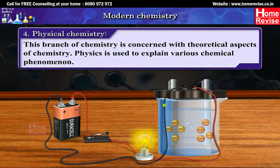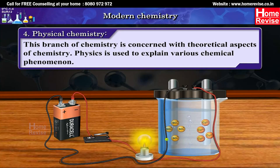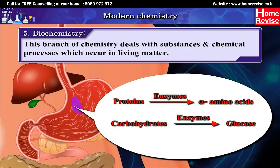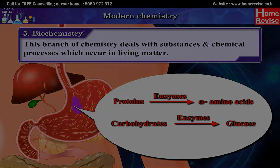4. Physical Chemistry: This branch of chemistry is concerned with theoretical aspects of chemistry. Physics is used to explain various chemical phenomena. 5. Biochemistry: This branch of chemistry deals with substances and chemical processes which occur in living matter.